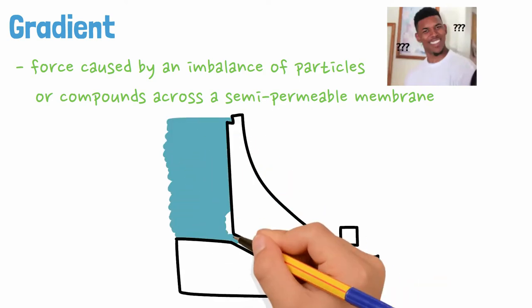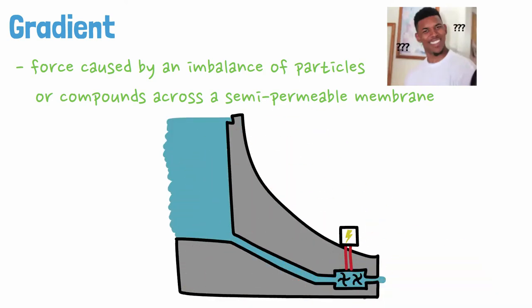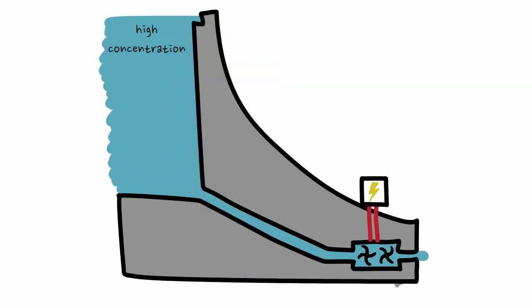It sounds complicated, but just think of it like a dam. We have a high concentration of water on one side of the dam and a low concentration of water on the other side. This high concentration of water causes a gradient force that can push turbines to generate electricity as the water flows through the dam.